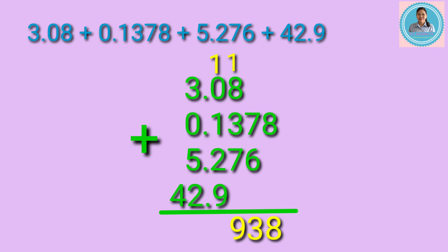Add the digits in the tenths place: 1 plus 0 plus 1 plus 2 plus 9 equals 13 — bring down 3 and carry 1. Next, add the digits in the ones place: 1 plus 3 plus 0 plus 5 plus 2 equals 11 — bring down 1, carry 1. Then add the digits in the tens place: 1 plus 4 equals 5. Now let's put the decimal point in the sum directly below the decimal point of the addends. The answer is 51 and 3,938 ten-thousandths.